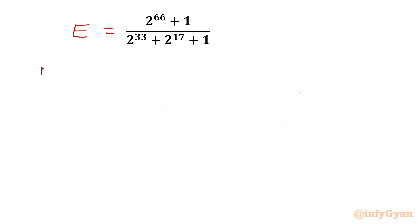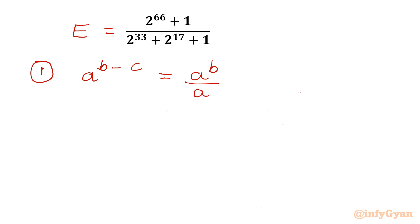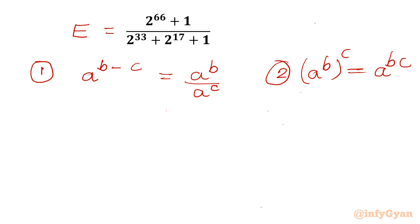I will begin by writing two exponent properties. First: a^(b−c) can be written as a^b / a^c. Second: (a^b)^c can be written as a^(b×c).